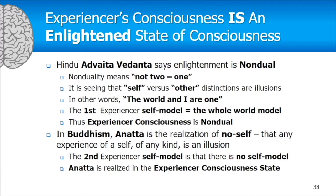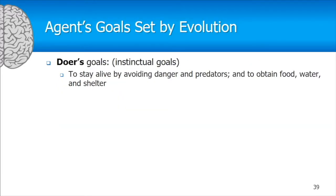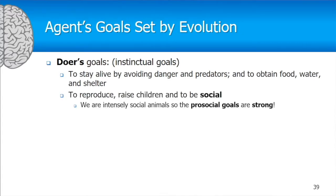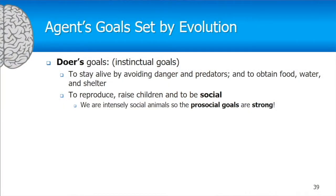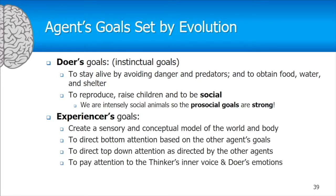For agents' goals, the doer's goals are set by evolution: stay alive, avoid danger and predators, obtain food, water, and shelter, reproduce, raise children, and be social. Humans are intensely social animals, so the prosocial goal is very strong. The experiencer's goals are to create a sensory model of the world — a very large part of our brain — and to direct top-down and bottom-up attention, paying attention to the thinker's inner voice and the doer's emotions.